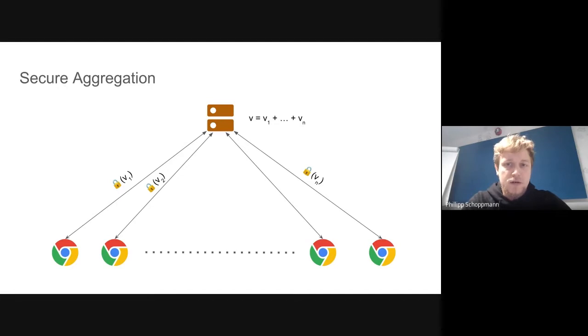In the setting of secure aggregation, we have many clients, here n, and each of them has a vector. We want a single aggregation server at the center to learn the sum of all the client's vectors. Crucially, we don't want the server to learn anything about an individual client's contribution, so that means nothing beyond the sum should be learned.